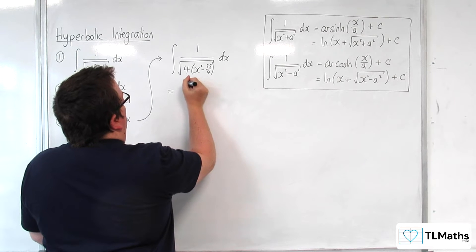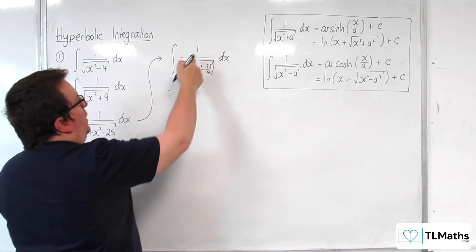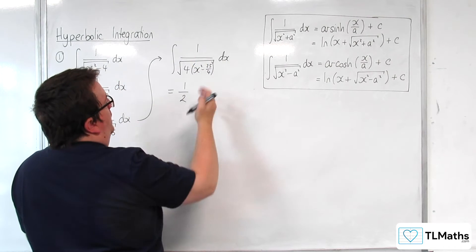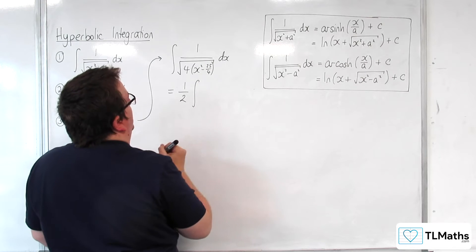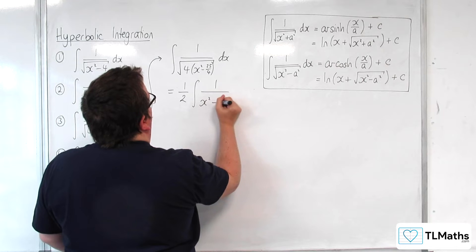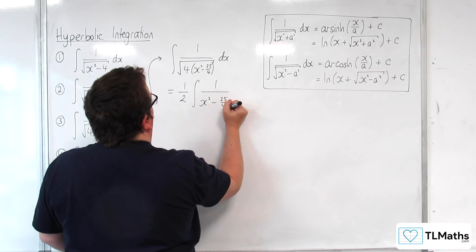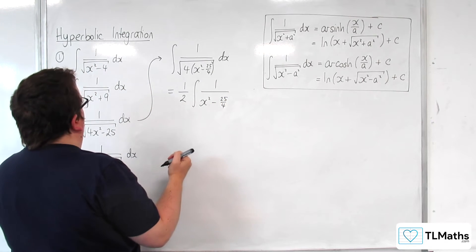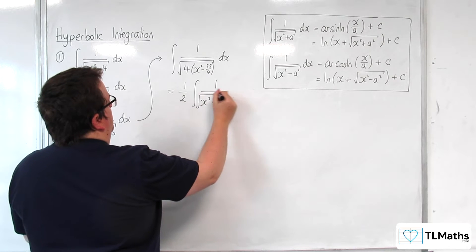So we would have that's equal to 1 over the square root of 4, so 1 half times the integral of 1 over x squared take away 25 quarters.